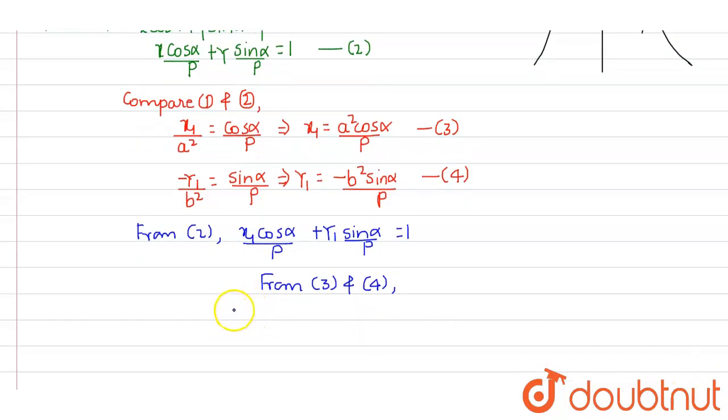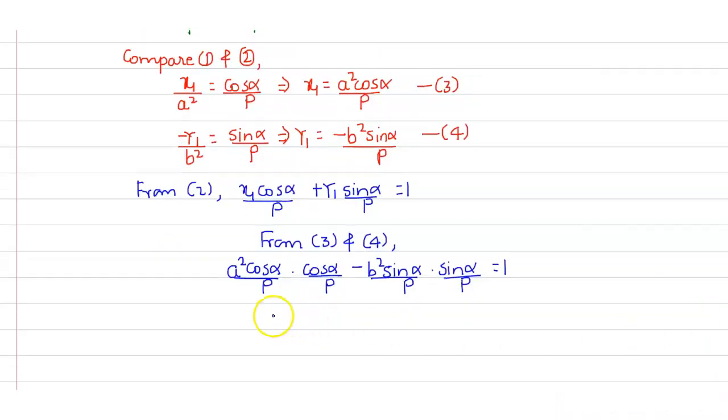From 3 and 4 what we are going to get: x₁ which is a² cos α/p into cos α/p plus y₁ that is -b² sin α/p times sin α/p equal to 1. So what we are going to get? We will get a² cos² α minus b² sin² α is equal to p².